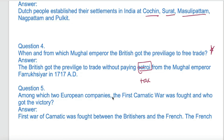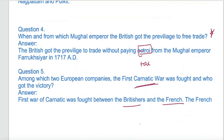Among which two European companies was the first Carnatic War fought, and who got the victory? There were two European companies fighting the Carnatic War: the British and the French. In the first Carnatic War, the French won.